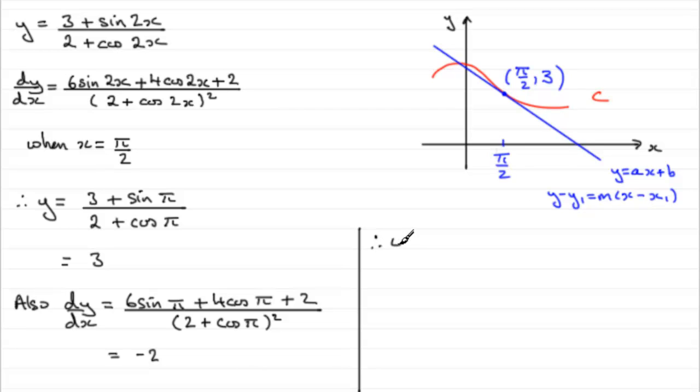So we can say that, therefore, the equation of the tangent is... And what is it? Well, using this then, it's going to be y minus y1, which is the 3, equals m, the gradient, which is -2, times x minus x1. And x1 was the π/2.